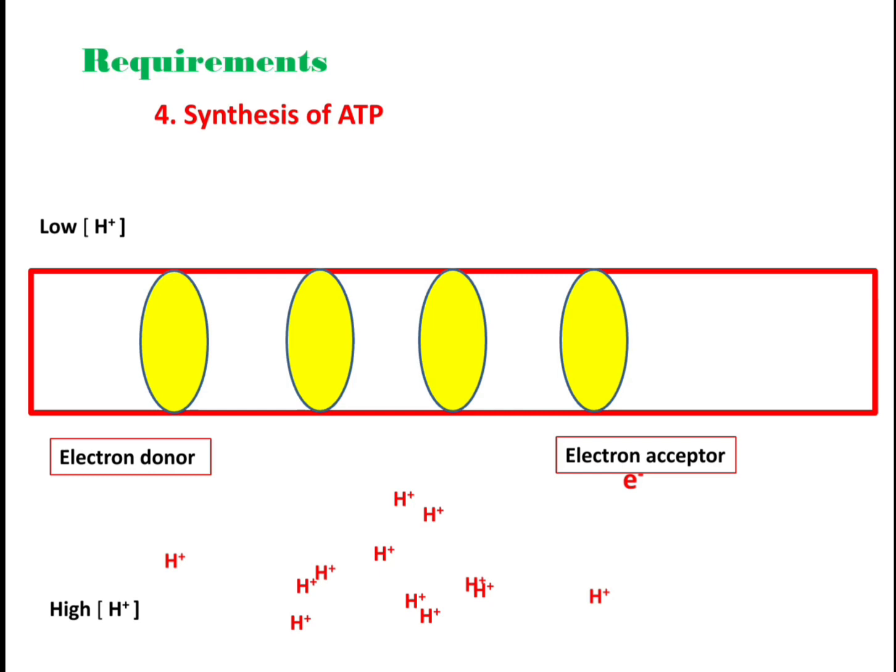These protons have only one way to cross the membrane, that is through ATPase or ATP synthase, which is a protein complex. When these protons pass through this ATP synthase, there is formation of ATP molecules. When four protons pass through this ATP synthase, one ATP molecule is formed.